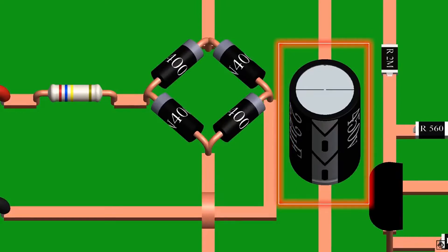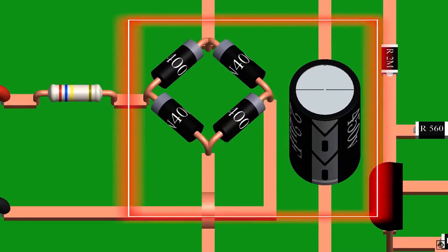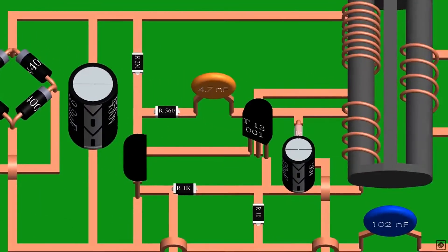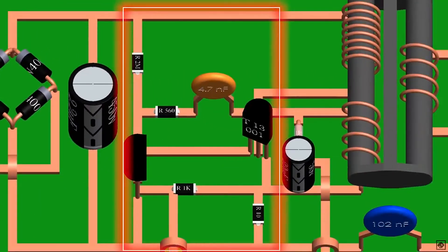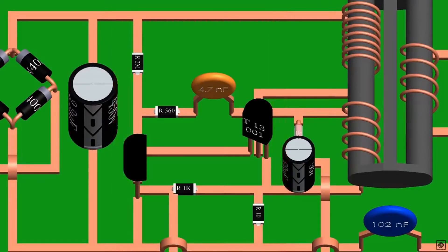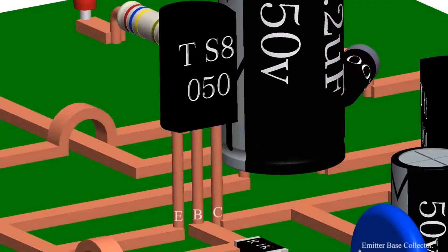This is an oscillator circuit. This converts DC back to high frequency AC of 15 to 50 kilohertz. We can see the values of the components. This is transistor S8050. This is its pin configuration.